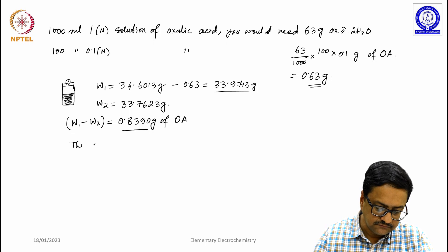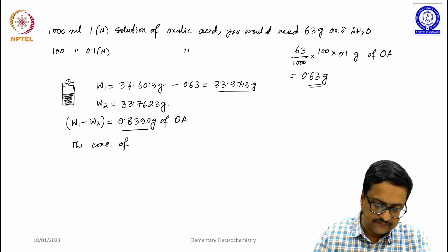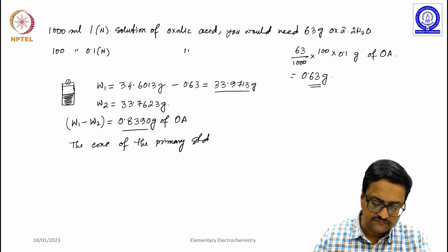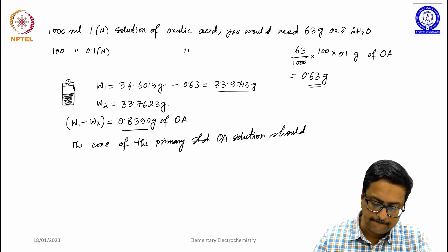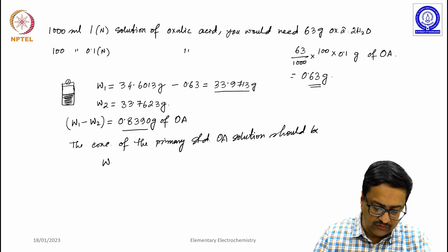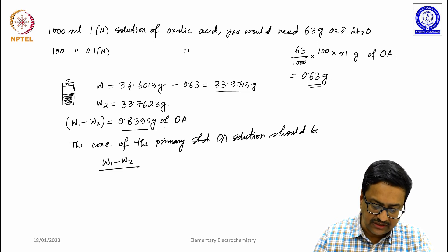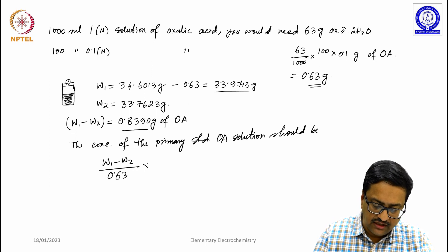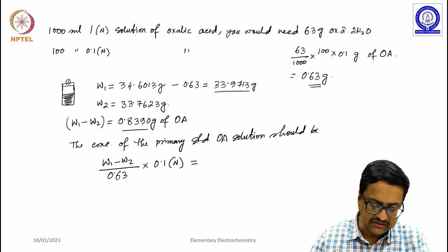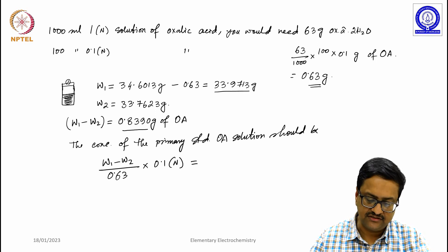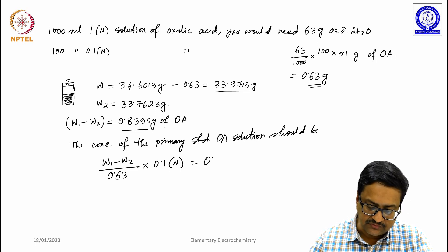So the concentration of the primary standard oxalic acid solution should be this W1 minus W2 divided by 0.63 into 0.1 normal. So here when you replace W1 minus W2 by 0.8390, we end up getting that as 0.1332 normal.